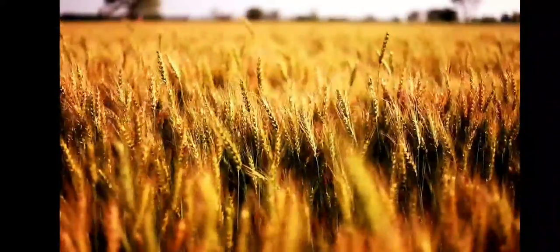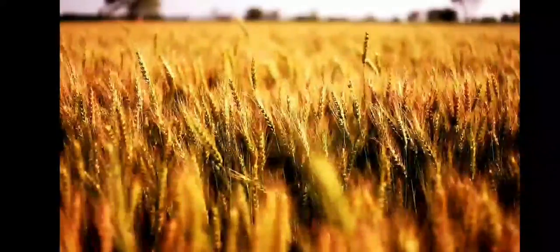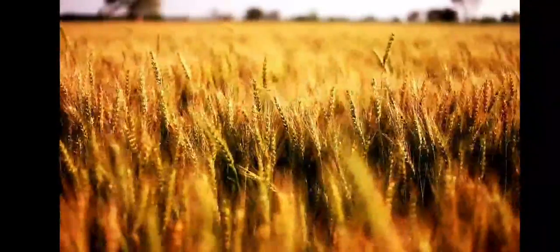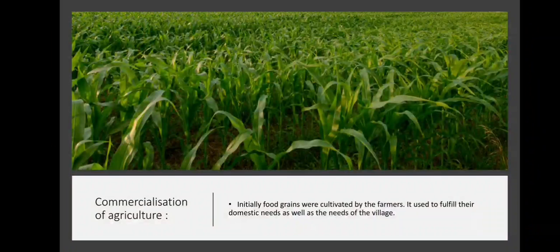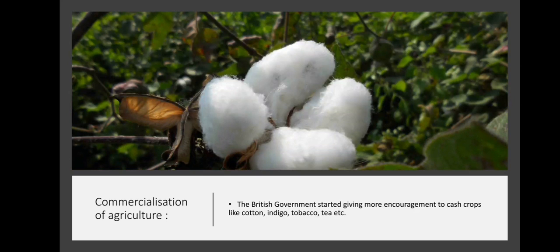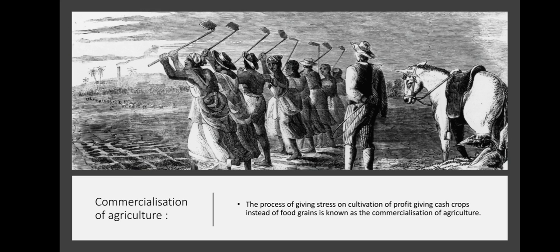Commercialization of Agriculture. Initially, food grains were cultivated by farmers to fulfill their domestic needs as well as the needs of the village. The British government started giving more encouragement to cash crops like cotton, indigo, tobacco, tea, etc. The process of giving stress on cultivation of cash crops instead of food grains is known as the commercialization of agriculture.